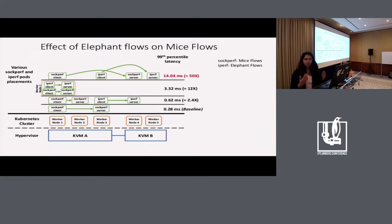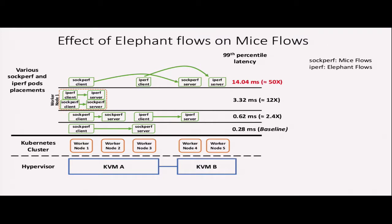To get a sense of how elephant flows affect mice flows, I conducted some experiments. I have two KVM hypervisors with a Kubernetes cluster of five worker nodes installed on top. I deployed Sockperf and Iperf applications in pods — Sockperf generates mice flows and Iperf generates elephant flows. The Sockperf client makes a connection request to the Sockperf server, and I measure the 99th percentile latency for the Sockperf client.